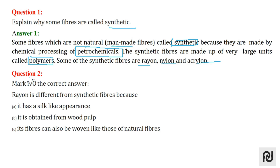Moving on to question 2, which is mark the correct answer. Rayon is different from synthetic fibres because — the correct option is the second one — it is obtained from wood pulp.